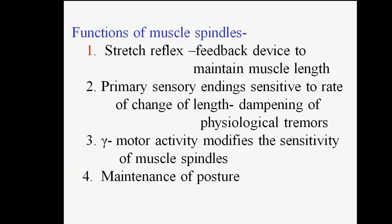The functions of muscle spindle include: first, the stretch reflex — they act as a feedback device to maintain muscle length. Second, the primary sensory endings are sensitive to the rate of change of length, meaning they are responsible for dampening of physiological tremors. Third, gamma motor activity modifies the sensitivity of muscle spindles and contributes to maintenance of posture.